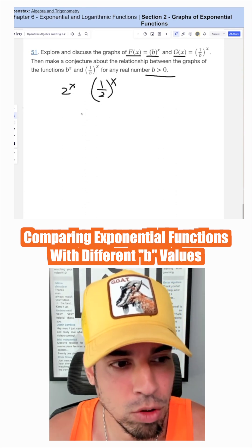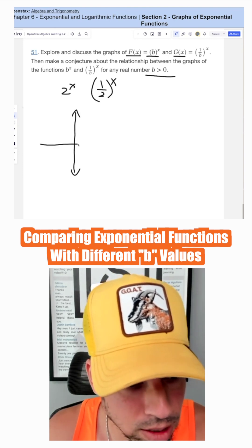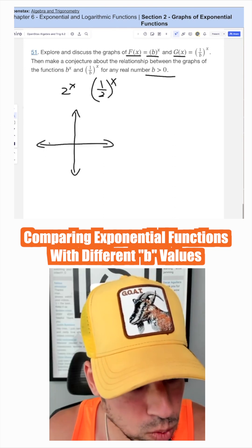And when you have two functions like this, you can see that the one where it's 2 to the x is going to be going up to the right, because it's greater than 1. So it looks like this.